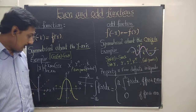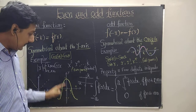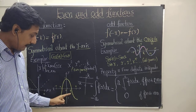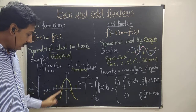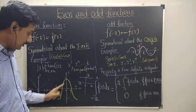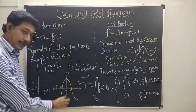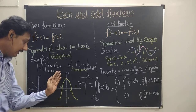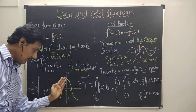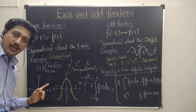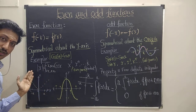Similarly, let's see the graph of the cosine function. cos 0 = 1, cos(π/2) = 0, cos π = −1. The cosine graph is symmetric about the positive y-axis — the left-hand side of the y-axis is a mirror reflection of the right-hand side. That's why cosine is called an even function.